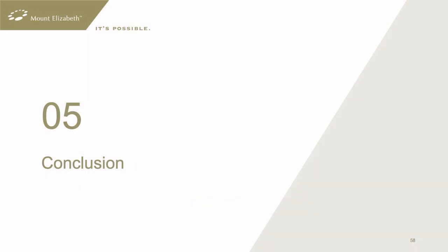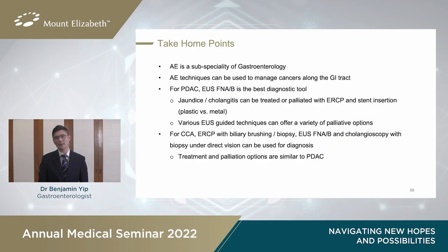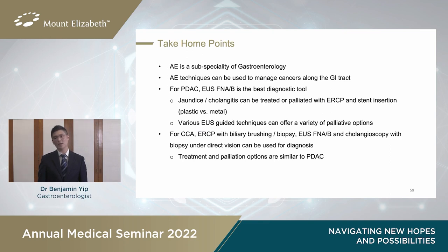In conclusion, ladies and gentlemen, advanced endoscopy is a subspecialty of gastroenterology, and there are various techniques that can be used to manage cancers along the GI tract, best demonstrated with pancreatic adenocarcinoma. EUS FNAB is the best diagnostic tool, and both jaundice and cholangitis can be treated or palliated with ERCP and stent insertions, and various newer EUS-guided techniques can offer a variety of palliative options. For cholangiocarcinoma, the same can be done with ERCP, EUS and FNAB, and also cholangioscopy, with treatment and palliation options similar to PDAC. Thank you very much for your kind attention.